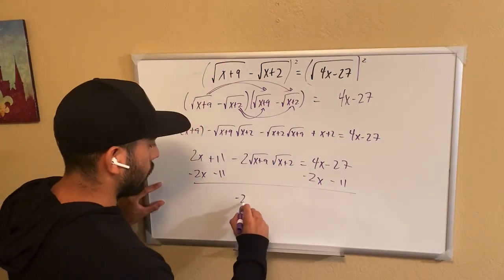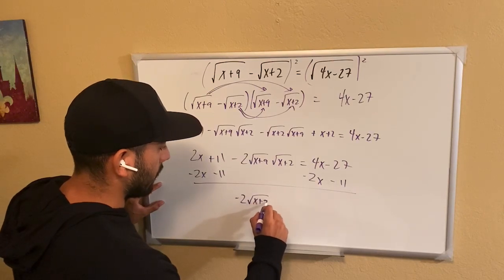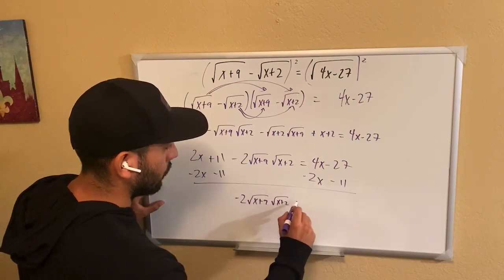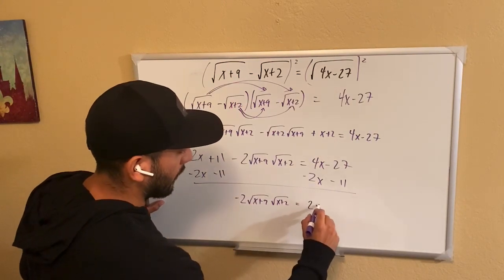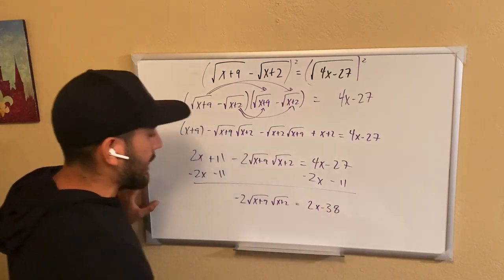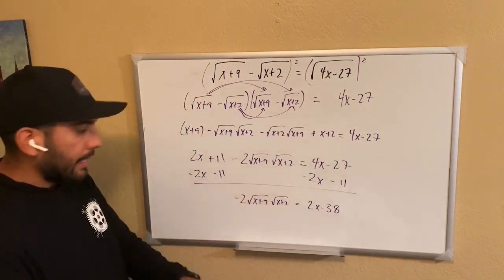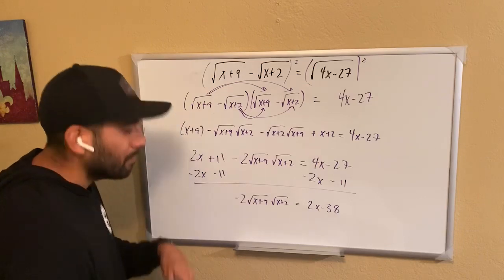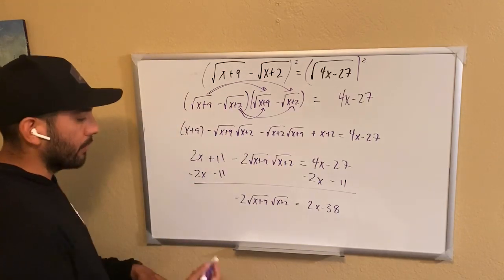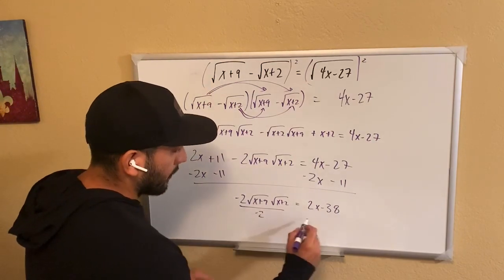I can make it 2 times root x plus 9 times root x plus 2 is equal to 2x minus 38. Now, before I do anything here, I want to get rid of this negative 2. It's just going to make this a lot easier for me. So I'm going to go ahead and divide everything by negative 2.